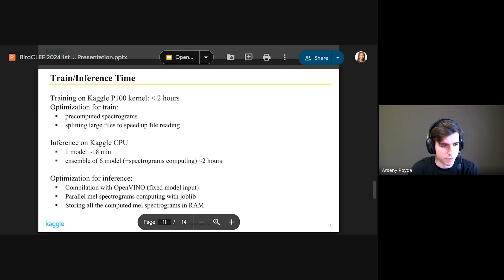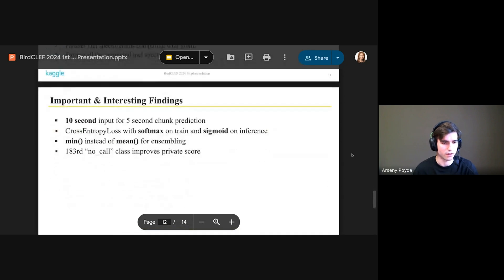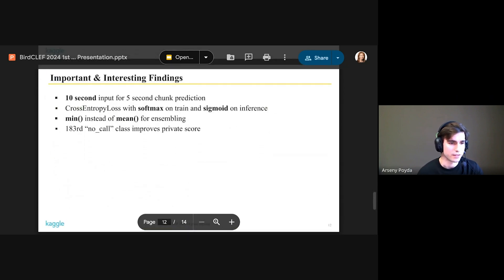Optimizations for inference are using OpenVINO, parallel spectrogram computing using joblib, and putting all spectrograms into RAM.